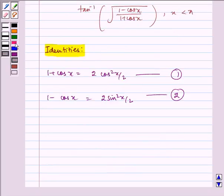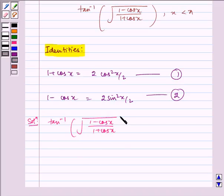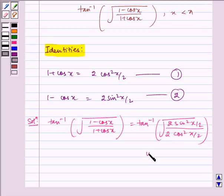Now let us add the solution. We have tan inverse of square root of 1 minus cos x by 1 plus cos x is equal to tan inverse of square root of 2 sin squared x by 2 divided by 2 cos squared x by 2. This is by using identities 1 and 2.